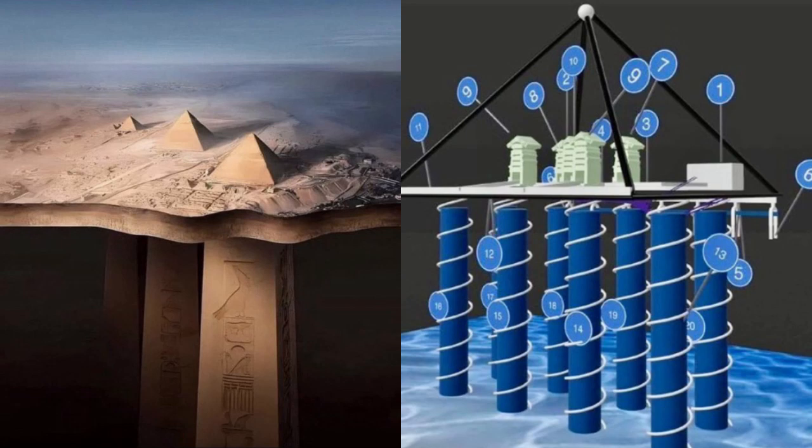So first things first, how do you even begin to find something like this? A giant spiral buried beneath one of the most heavily studied monuments in history. It's not like they just stumbled across an entrance while dusting off some old stones, right? No, definitely not Indiana Jones stuff here. This was high-tech detective work at its finest. Think cutting-edge imaging technology, sonar scanning, ground-penetrating radar, GPR for you techies out there.